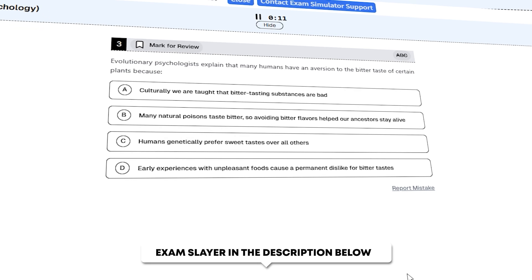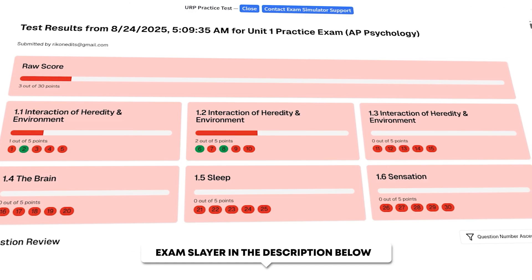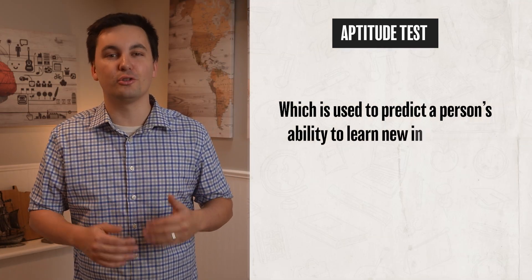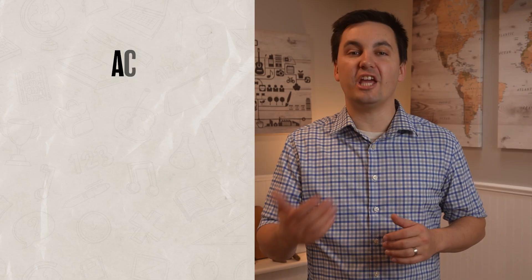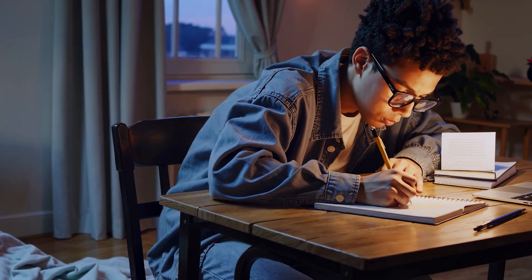If you need help studying for your unit exam, you can check out the Exam Slayer, which has a full unit practice exam, FRQ help, and an exam simulator that breaks down your results so you know exactly where you need to study. The other type of test is an aptitude test, which is used to predict a person's ability to learn new information or perform in the future — the focus is on potential instead of current knowledge. Examples of aptitude tests include the ACT, SAT, IQ tests, and career aptitude tests. Just remember: achievement tests look at what you know now, and aptitude tests look at what you are capable of learning later on.